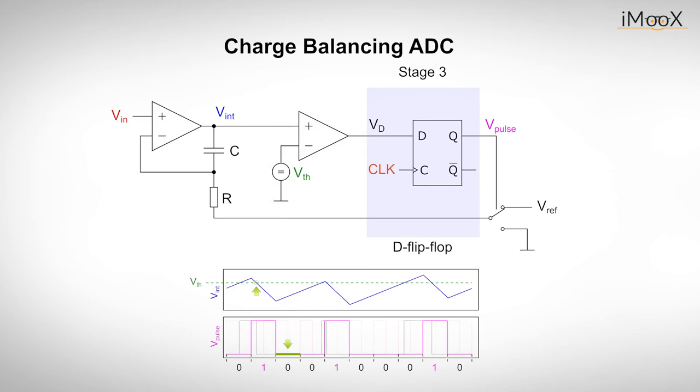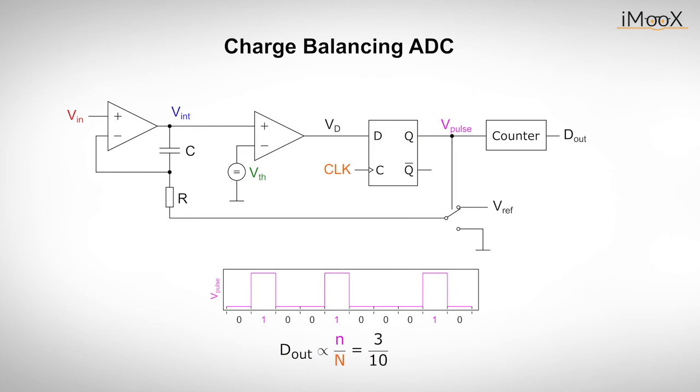In most practical applications, the output of the D flip-flop triggers a switch that adds a high precision current source for counter integration. At the output of the circuit, a subsequent counter can count the number of clock cycles the output is high and display the result as a digital value corresponding to the input voltage. Alternatively, the output signal can also be transmitted directly and later converted back to an analog value. This technique is often used because a digital signal is less susceptible to interference during transmission than an analog one.